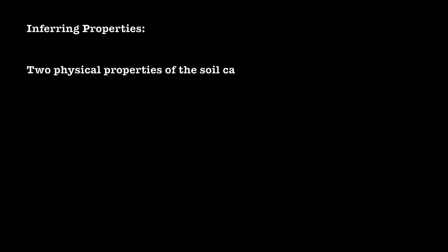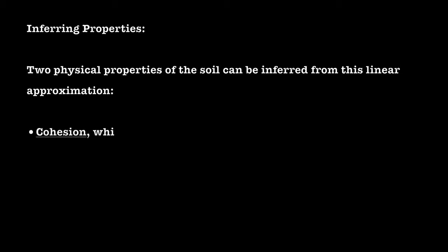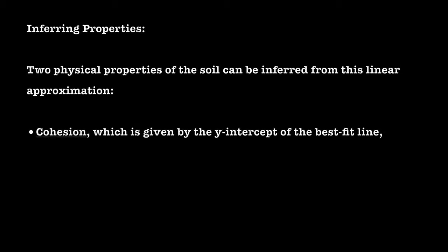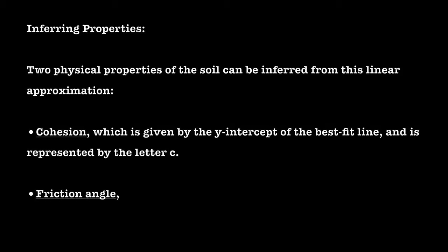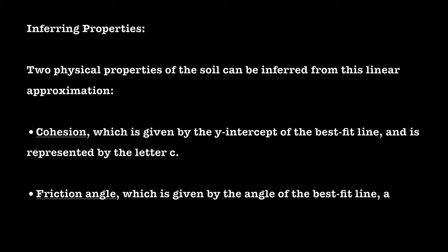Inferring properties. Two physical properties of the soil can be inferred from this linear approximation. Cohesion, which is given by the y-intercept of the best fit line and is represented by the letter C. Friction angle, which is given by the angle of the best fit line and is represented by the symbol phi.